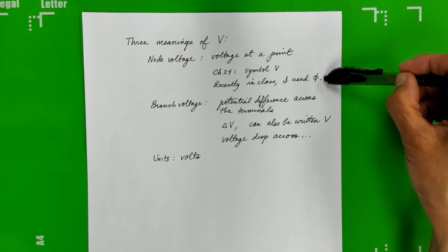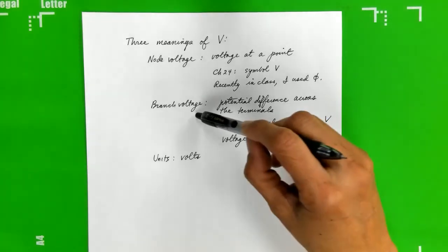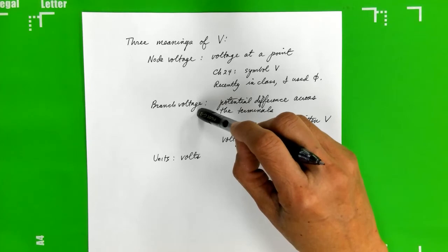Now there's another meaning of V, and that's known as branch voltage, which is used in the engineering literature.